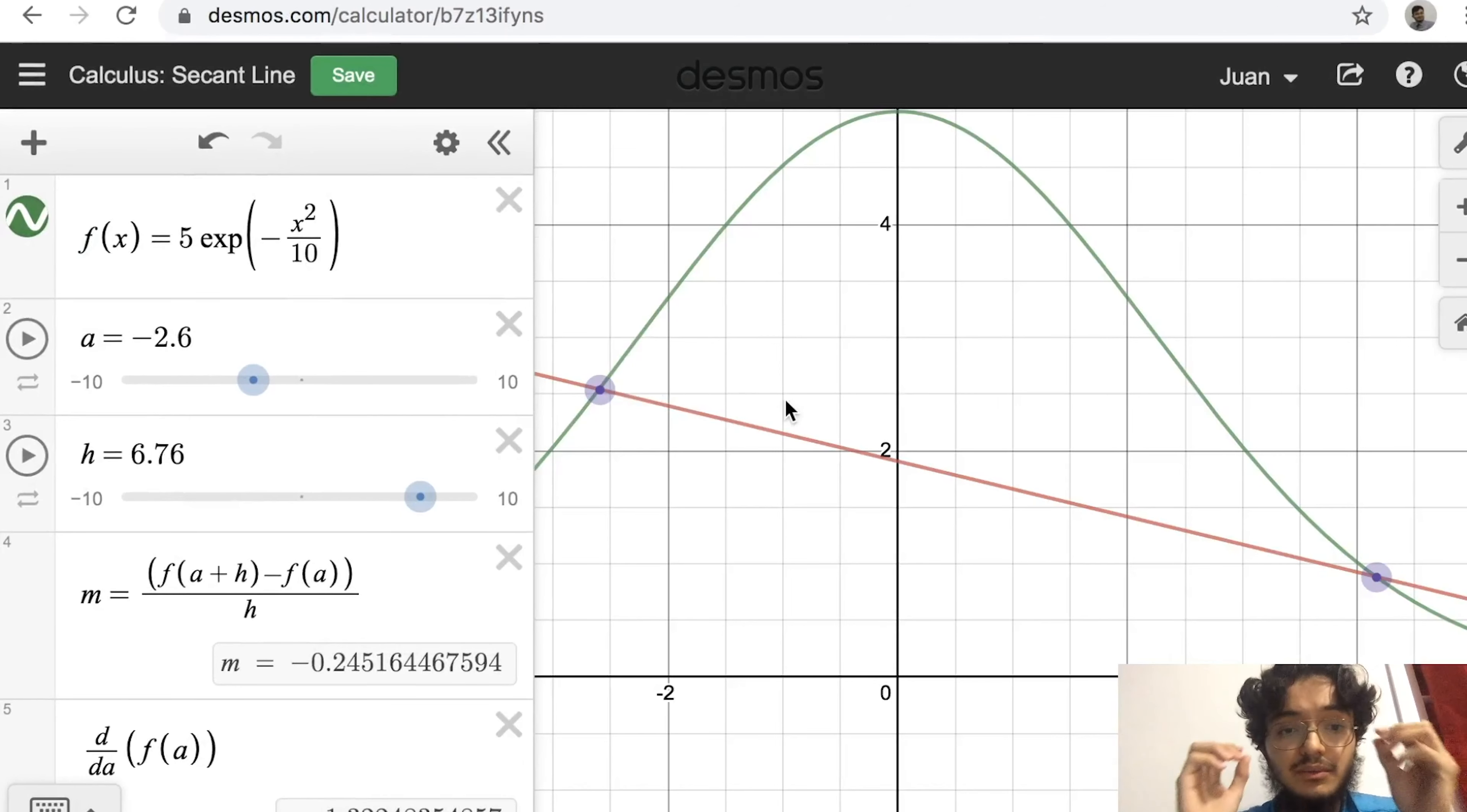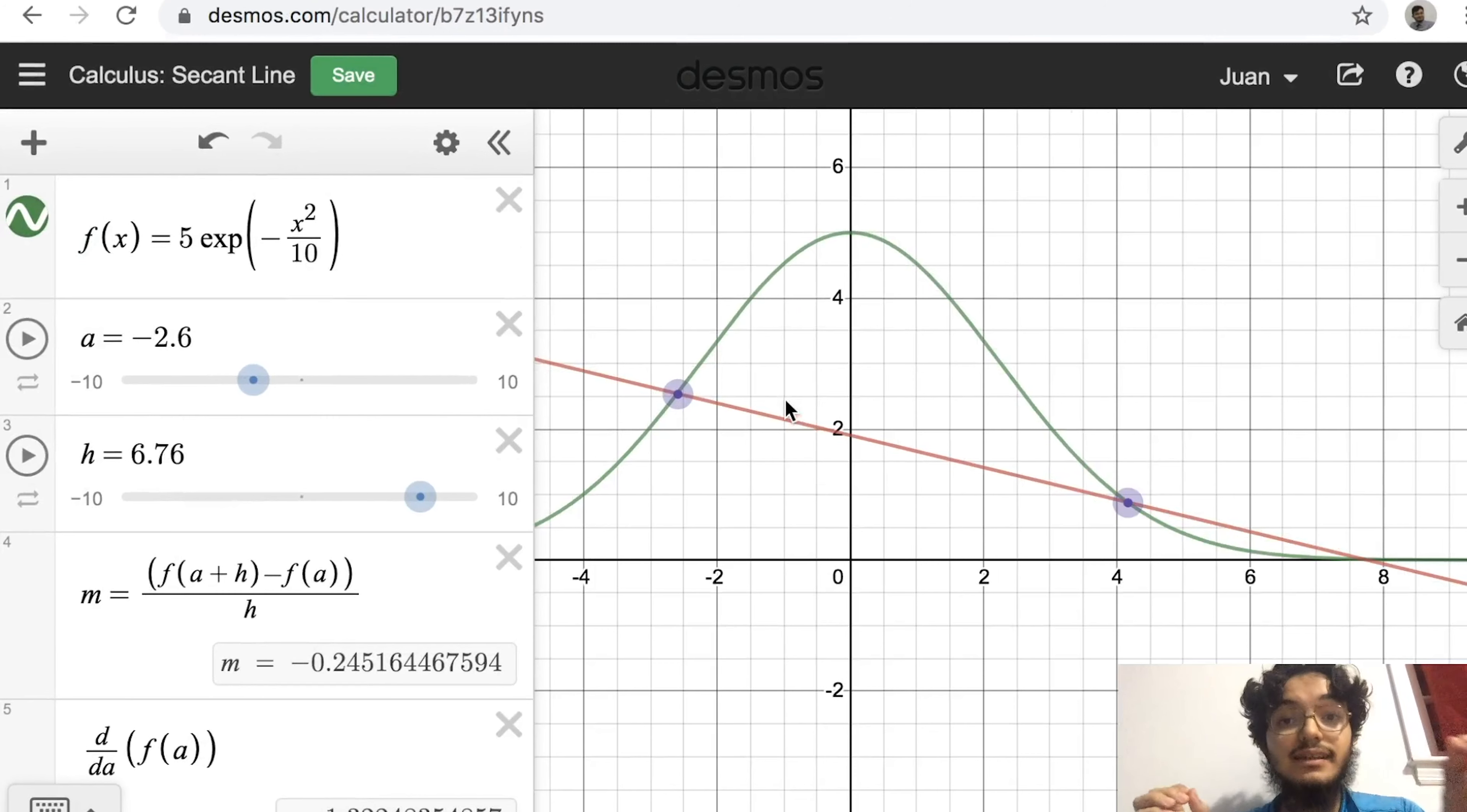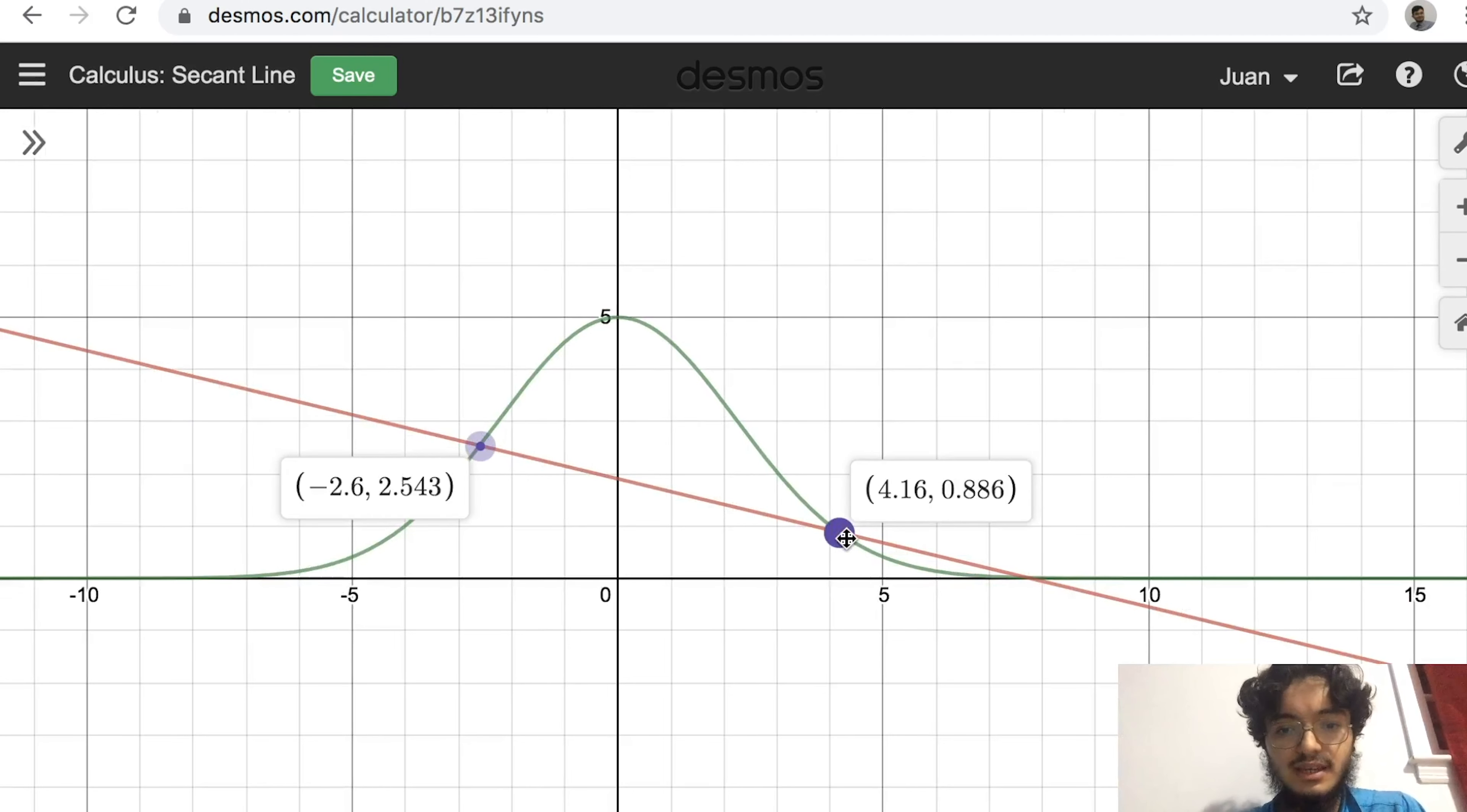So right here, we have a graph, which is commonly known as the Gaussian function. It just has some parameters over here that I added for convenience. And what I'm going to do is basically take two points of the graph. These two points on the graph are going to be crossed by a line. But that line is called the secant line. And that's precisely because it's going to cross two points on the graph that I have assigned.